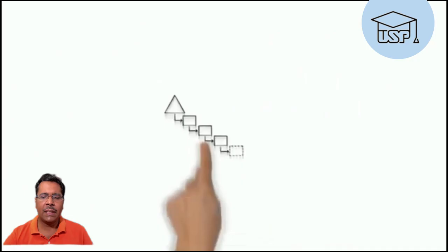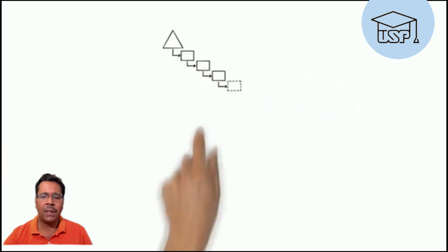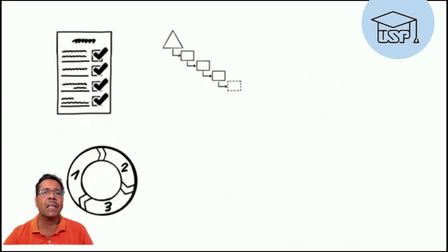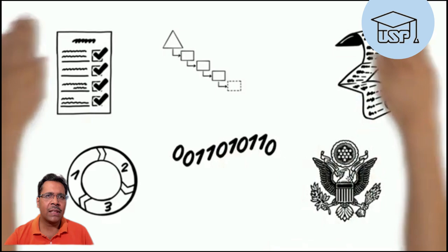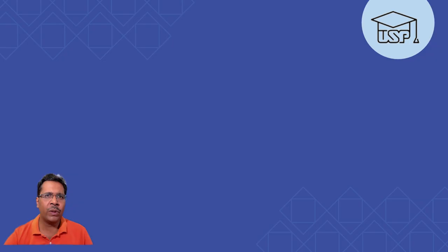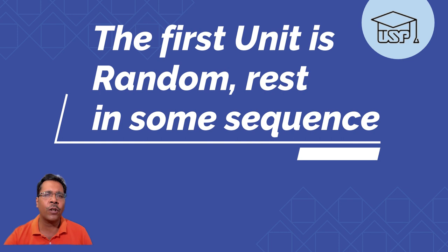Systematic or automatic random sampling is an adaptation of the simple random process. It is used when the population list is quite large and the sampling units cannot be conveniently numbered. In this case, we start from any individual or unit and then take every 28th, 38th, 48th, 58th, or any kind of number that suits us.